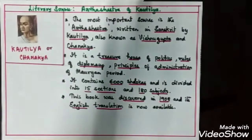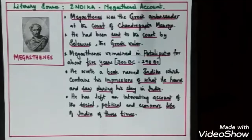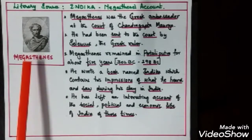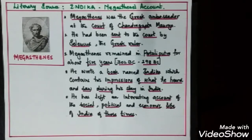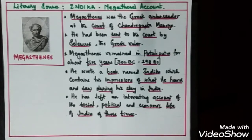The next literary source is Megasthenes' account. Megasthenes was the Greek ambassador at the court of Chandragupta Maurya, sent by Seleucus, the Greek ruler. Megasthenes remained in Pataliputra — the capital city of Magadha — for about five years, from 302 BC to 298 BC.